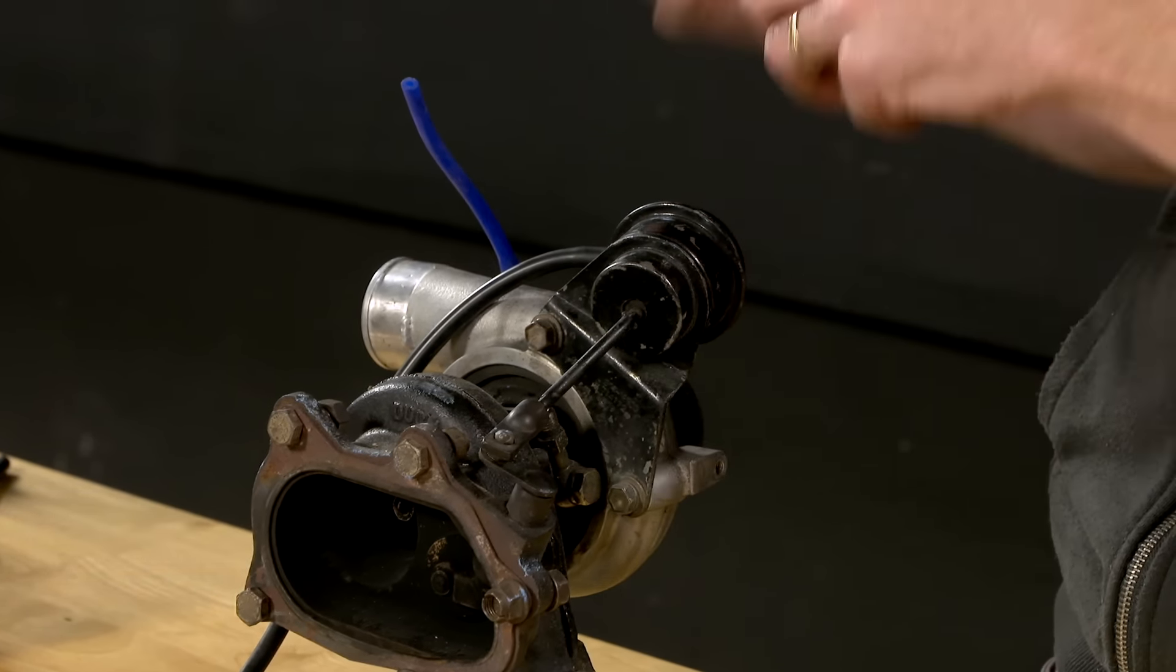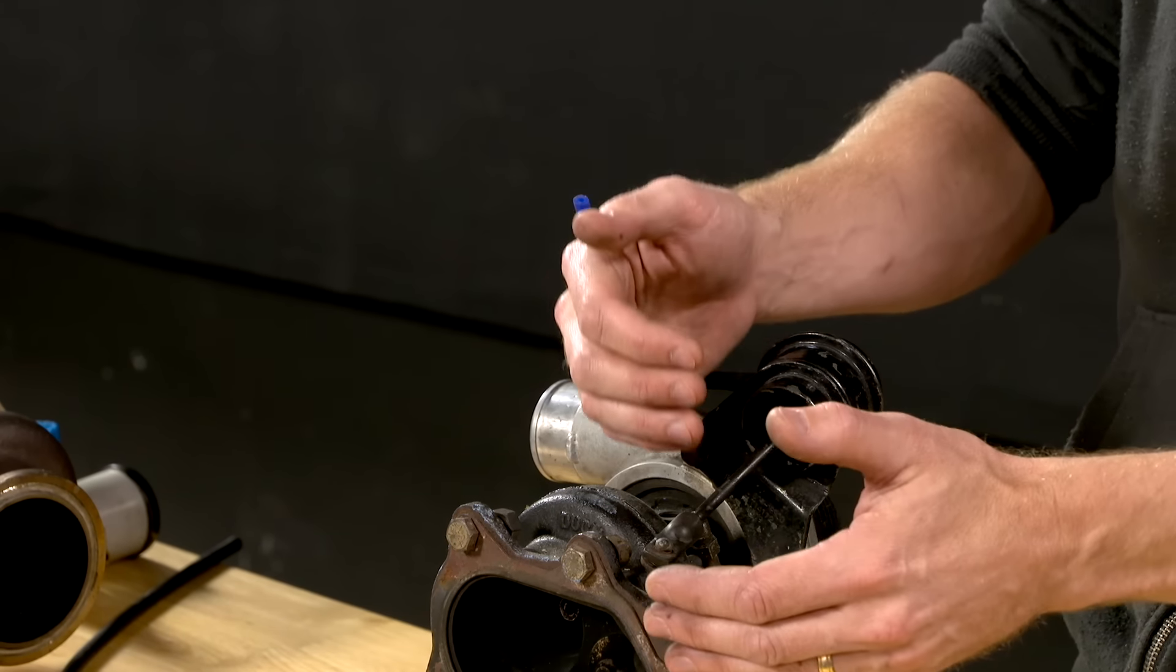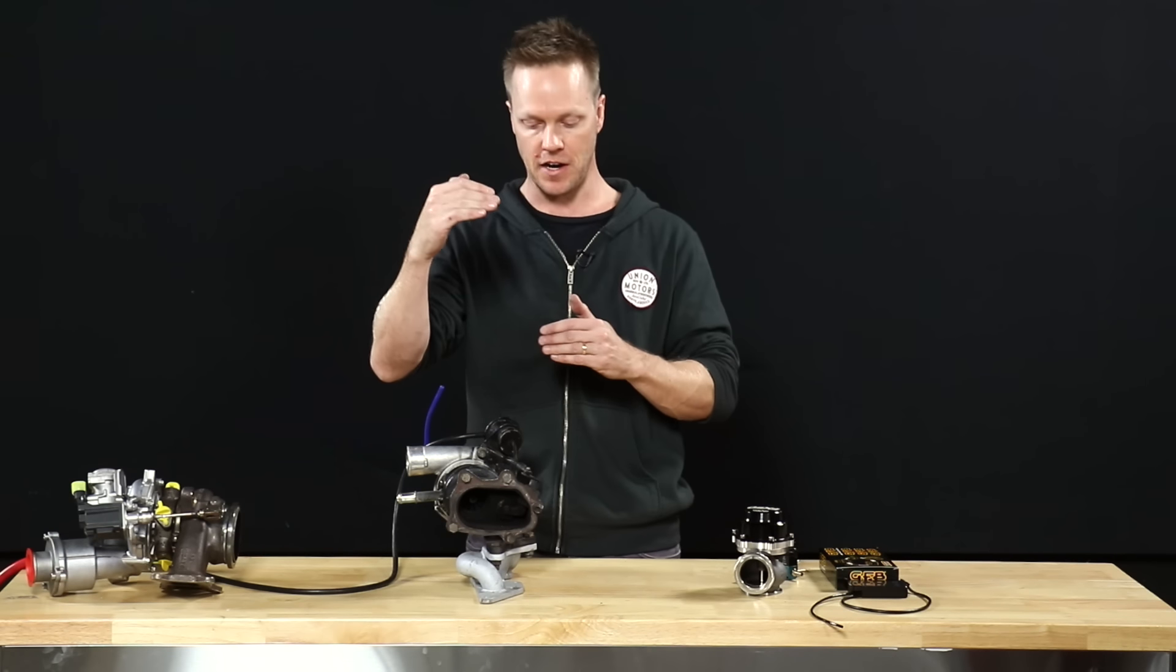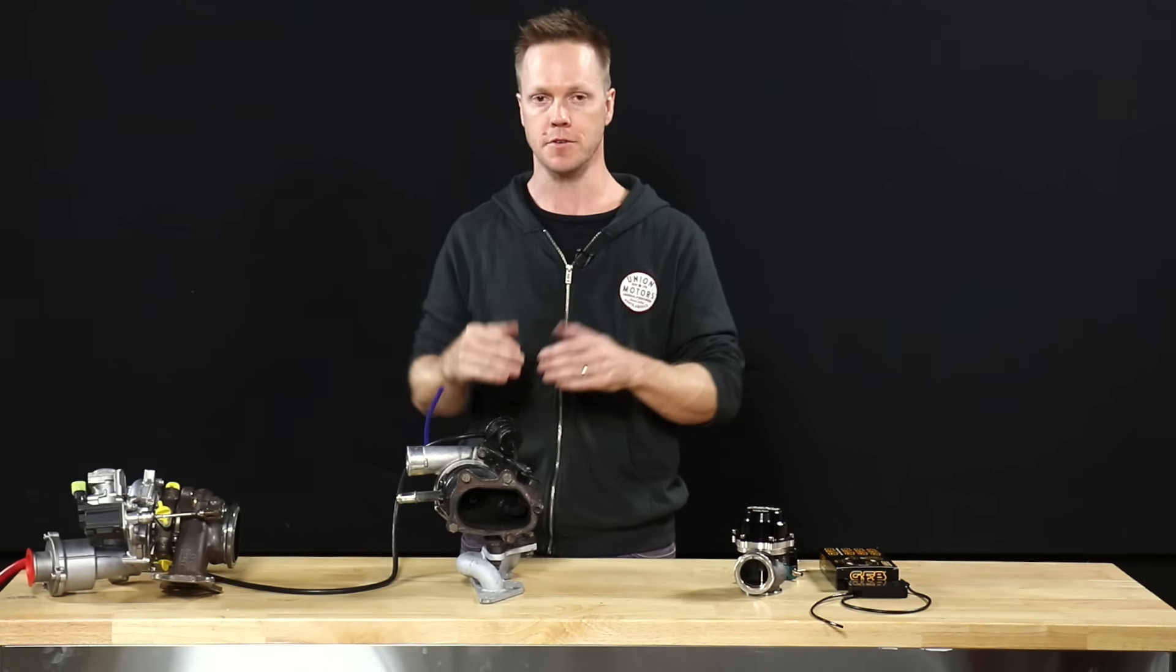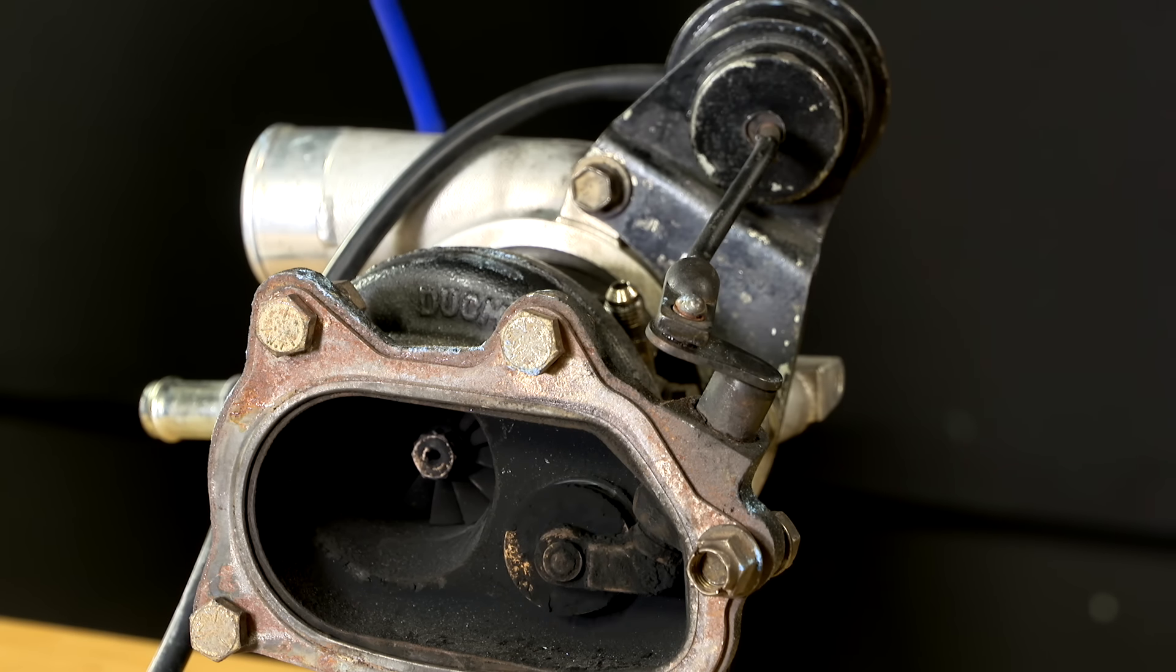So essentially this is actually a self-regulating kind of closed loop system. The higher the boost pressure goes, the further the wastegate flap opens and the more it will limit the boost pressure. So if boost pressure goes too far, the flap opens further, boost pressure will drop. So it will regulate pressure quite well as a system on its own.